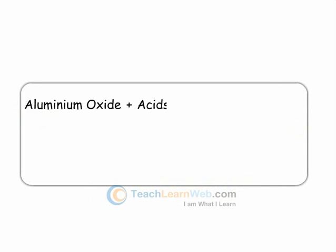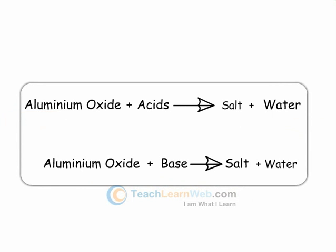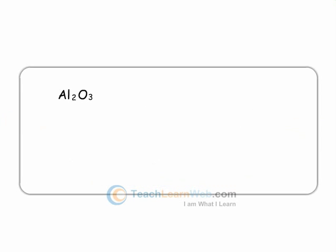When they react with acids, they produce salts and water, and with bases, they produce salts and water. Aluminium oxide, when reacts with HCl, an acid, gives aluminium chloride and water.